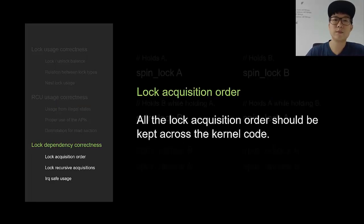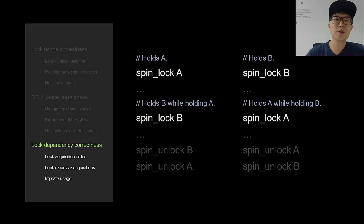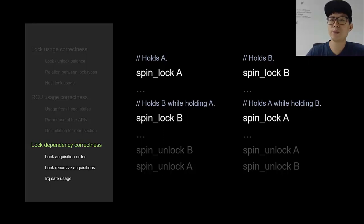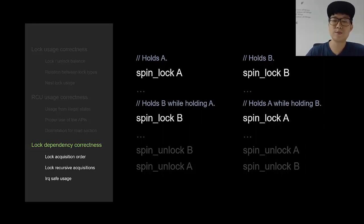Lock dependency correctness: all lock acquisition orders should be kept consistent across kernel code. The left-side code acquires spinlock A then tries to acquire spinlock B while holding A. The right-side code acquires spinlock B then tries to acquire spinlock A while holding B. The acquisition order differs between the two sides, which leads to deadlock, so LockDev reports it as a problem.